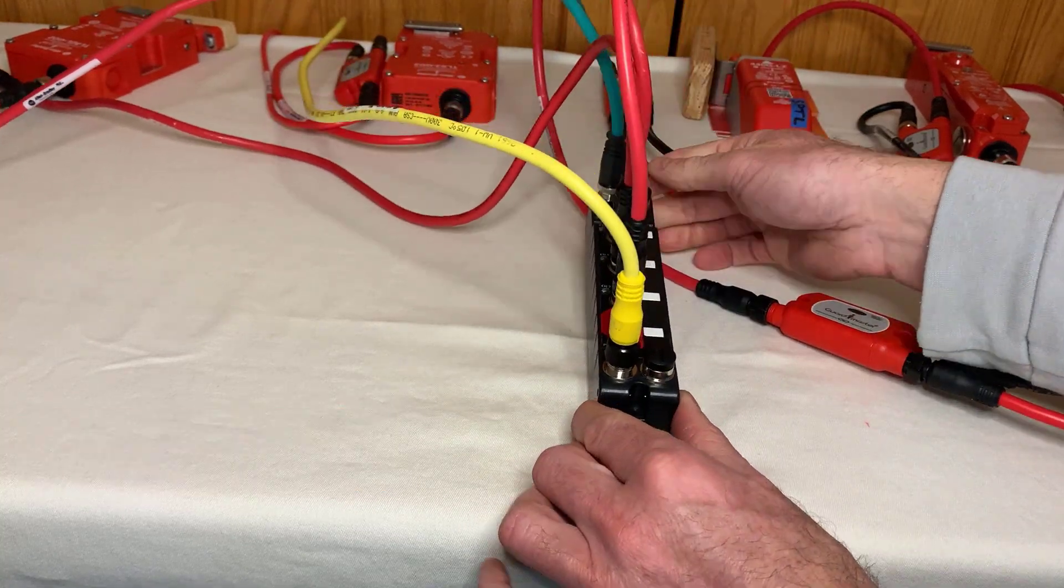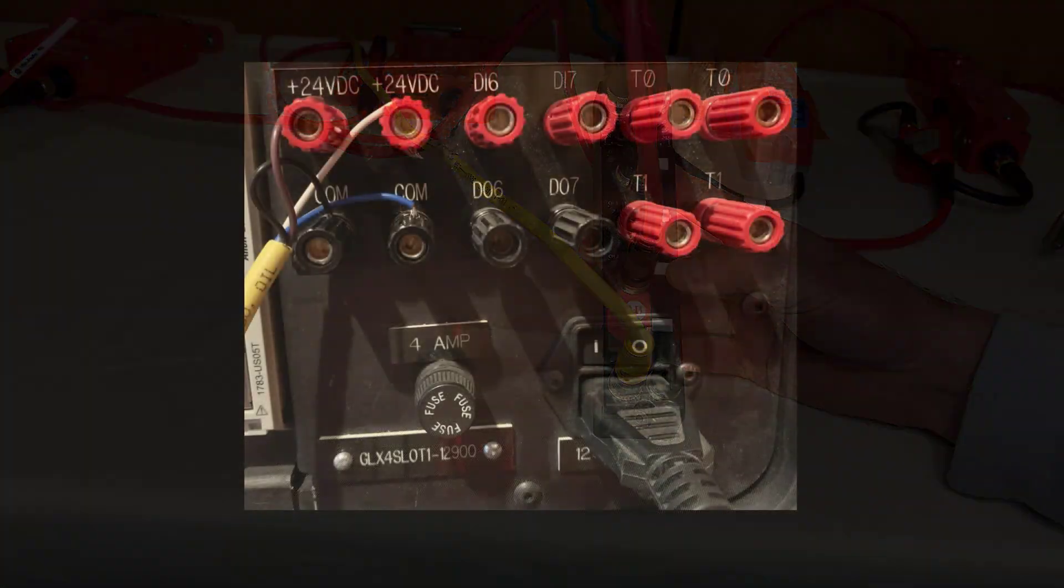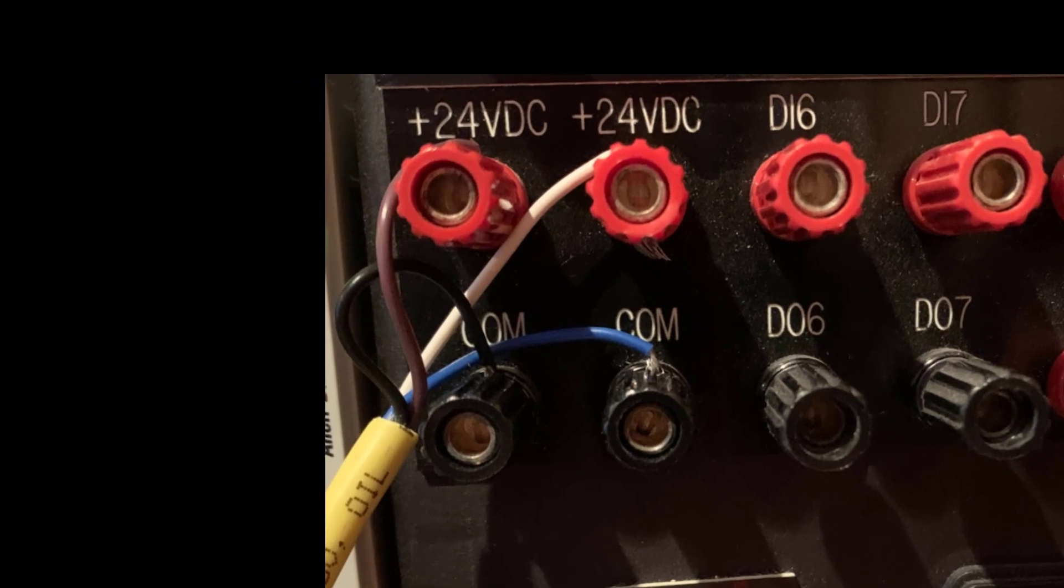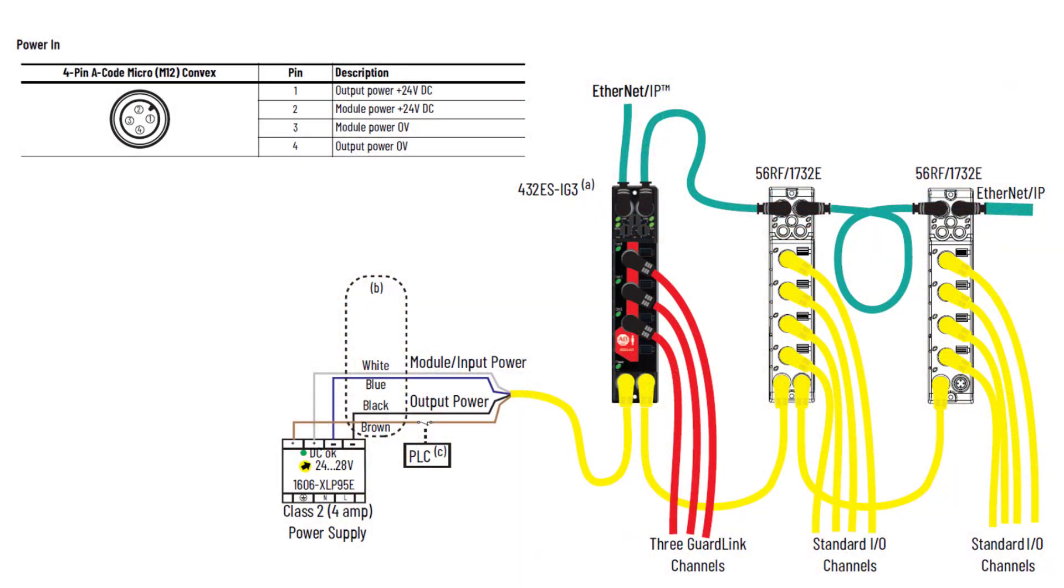The power supply may be the only wiring in a GuardLink system where pluggable patch cords are not used. Interesting enough, this is the only place where I made a wiring error. So let's look closely at the power supply wiring. The GuardLink interface only uses module input power coming in on pins 2 and 3, or the white and blue wire of a typical power cable.